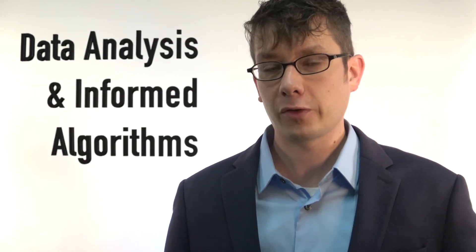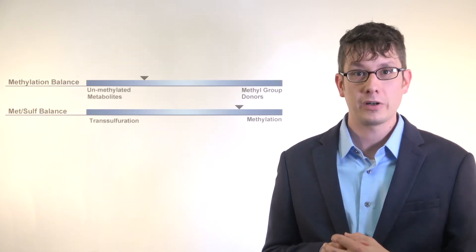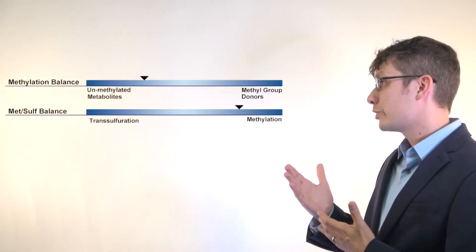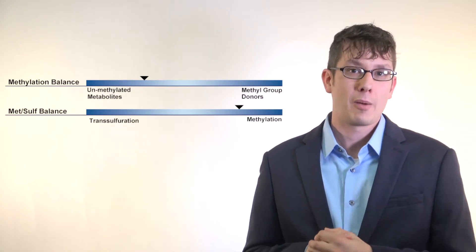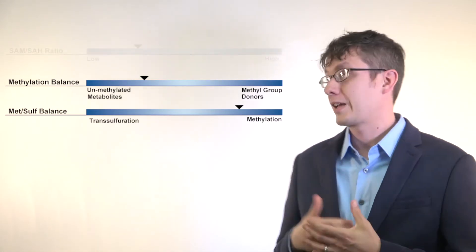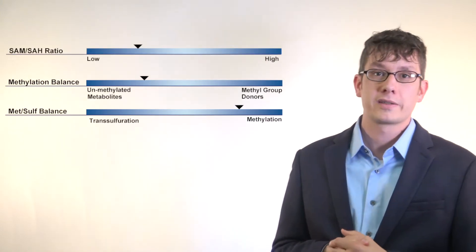Genova is also known for how we interpret and analyze the patient's results using data analysis and informed algorithms. The methylation panel is another example of how Genova provides a unique approach to interpretation with the additional two completely novel biomarkers called the methylation balance ratio and the medsulf balance ratio. These two brand new biomarkers also accompany the more traditional SAM-SAH ratio, also known as the methylation index.